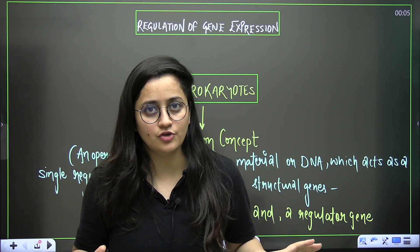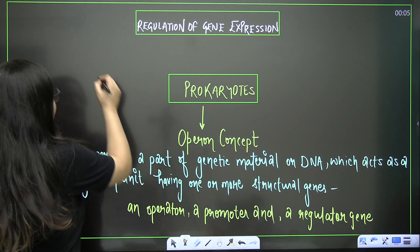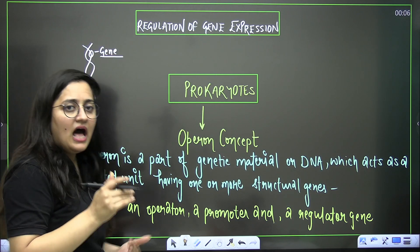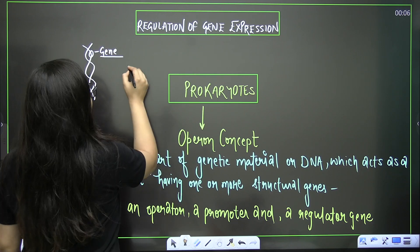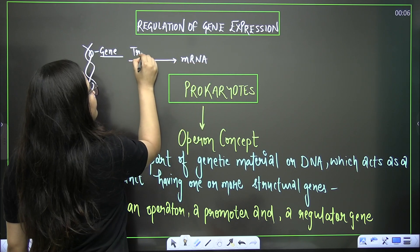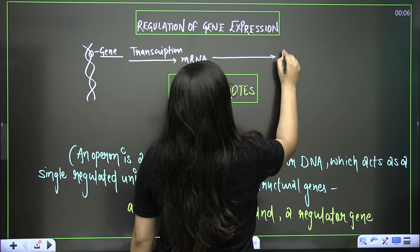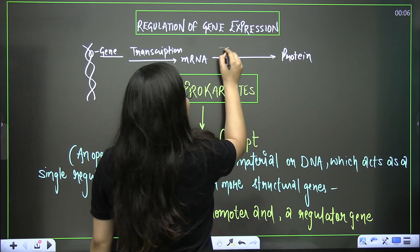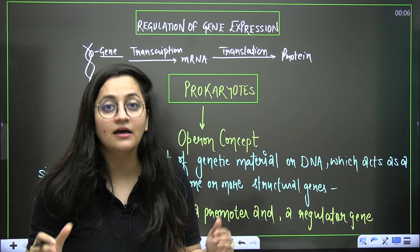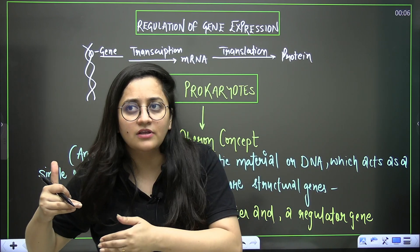Today our main topic is the lac operon — the lactose operon. Starting from the basics: when you talk about DNA, you know that DNA contains the gene, the basic unit of heredity. A gene expresses itself by undergoing transcription to produce mRNA, followed by translation to form a protein — the enzyme that helps in further physiological processes.